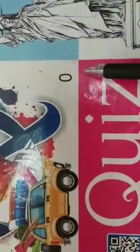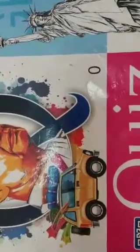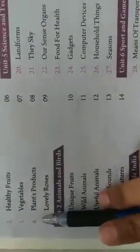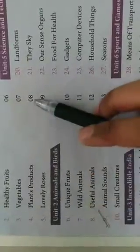Good morning, class UKG. Hope you all are fine at home. This is your GK class, so take out your GK book. In the previous video, we had completed our chapter number 3, Vegetables. So in today's class, we are going to start our next chapter number 4, Plants Products, which is given on page number 8.